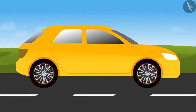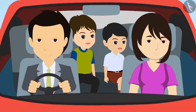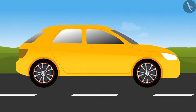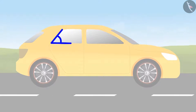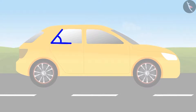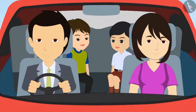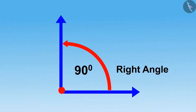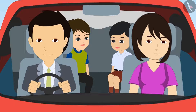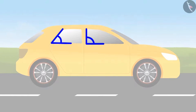They decide to find angles in the car too. In the back window, there is an angle smaller than a right angle. Bholu explains that this angle is not shaped like the letter L, and right angles look like L — so this one must be smaller than a right angle.